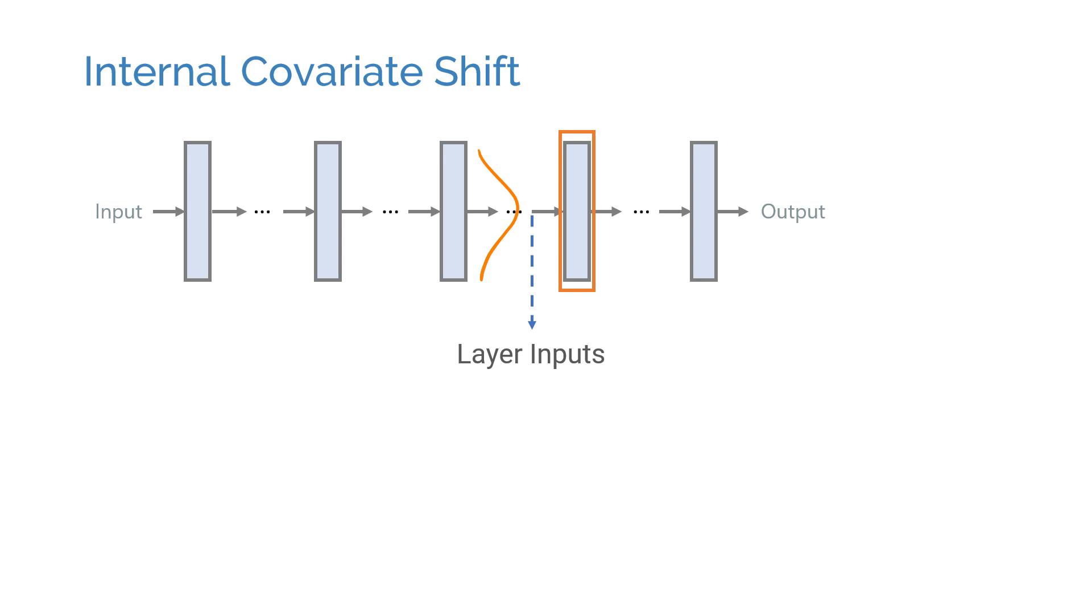In deep models, even small changes in the early layers get amplified through the network and cause a shift in the distributions of the later layers. Changes in the input distributions make it harder for the following layers to adapt. This problem is called internal covariate shift problem.